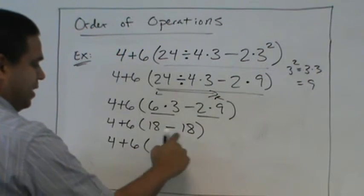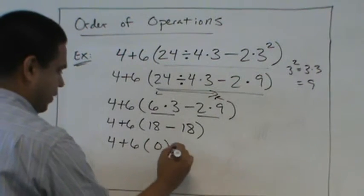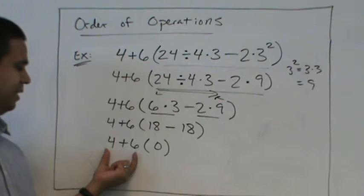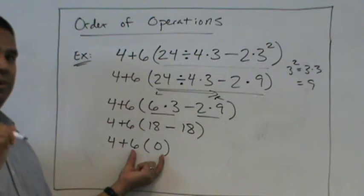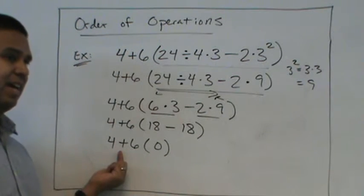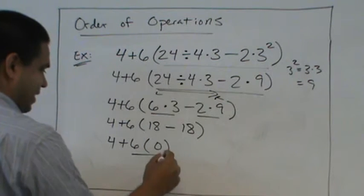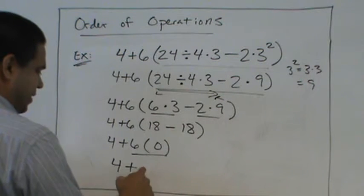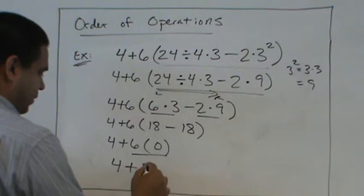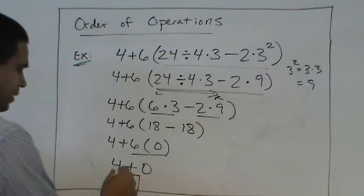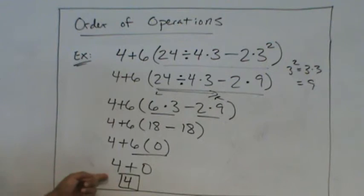18 minus 18? 0. Now would I add these or would I multiply these? Multiply. Multiply before we add. So 4 plus? 0. So our answer? 4. Very good.